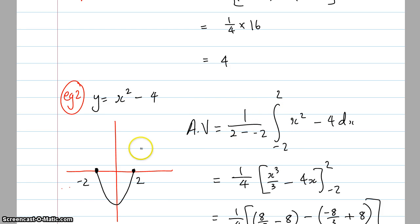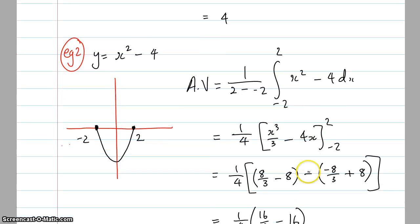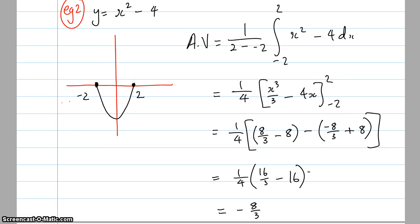So we get x squared minus 4, integrate between negative 2 and 2, and then 1 over 2 minus negative 2, so it ends up being a quarter out the front again. And x cubed over 3 minus 4x, sub in the values, and we end up getting negative 8 over 3.